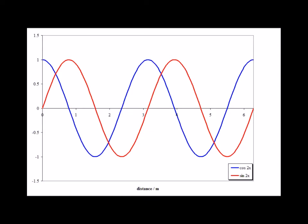Here is the free particle wave function e to the i kx where k is equal to 2. The real part is shown in blue and the imaginary part is shown in red. Notice that since k is equal to 2, this particle has twice the momentum, 2h-bar, as the particle where k is equal to 1.